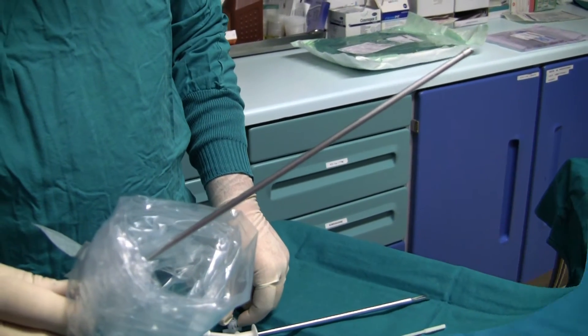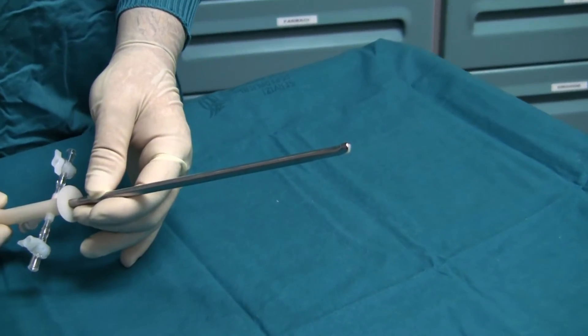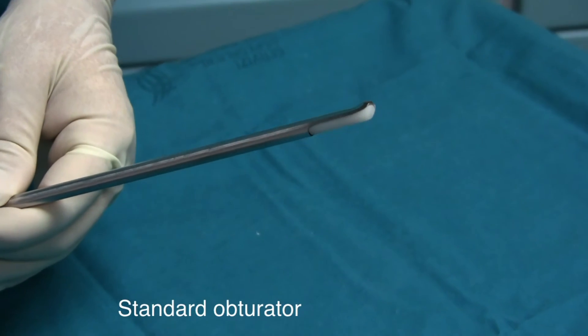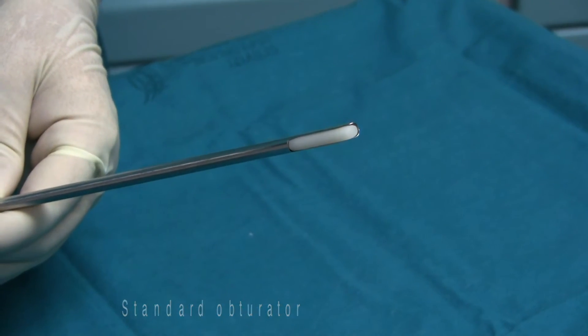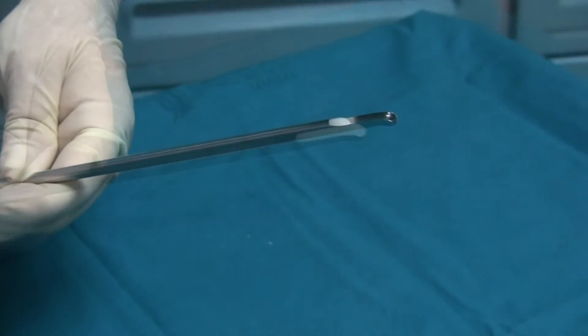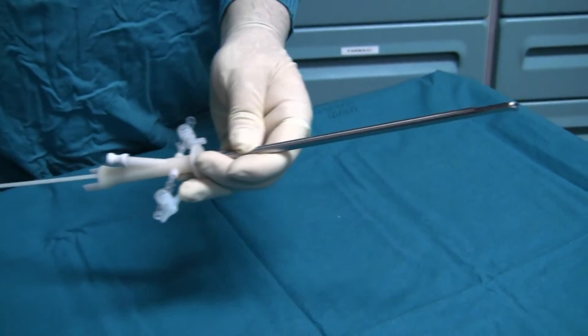Each outer steel sheath is equipped with a standard obturator for the insertion, a rounded distal end and ergonomic handle. This device functions as an obturator of the outer steel sheath, facilitating the device insertion and eliminating each kind of trauma.